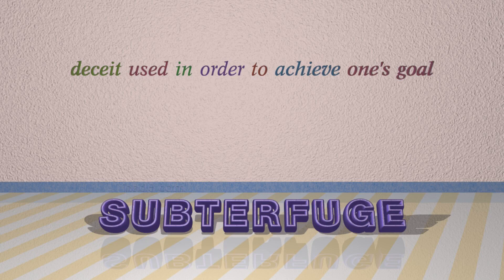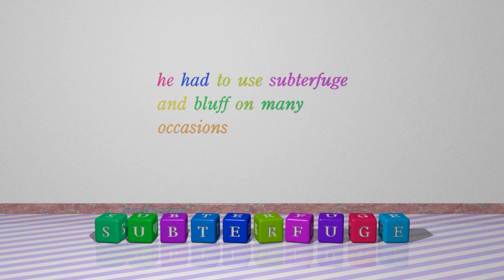Number 1: Subterfuge. Which means: Deceit used in order to achieve one's goal. For example: He had to use subterfuge and bluff on many occasions.